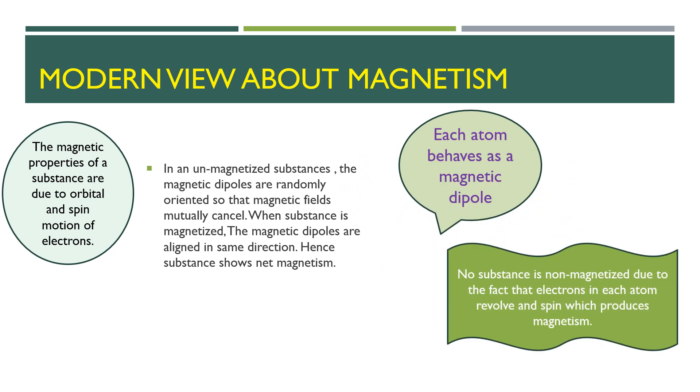The revolving and spinning of electrons in each atom cause magnetism. No substance can be considered as non-magnetic material. It is important to note that spinning motion of electrons is particularly more responsible for magnetism of a substance as compared to the orbital motion of electrons.